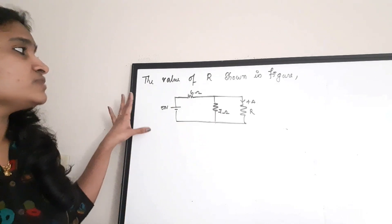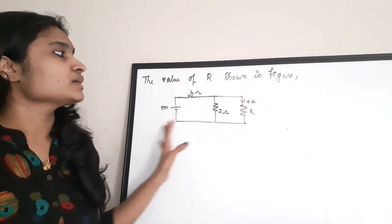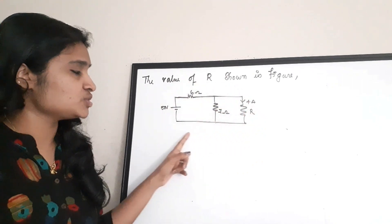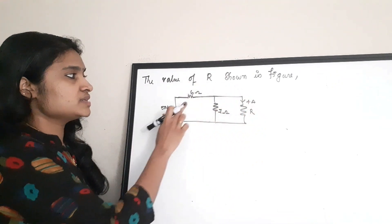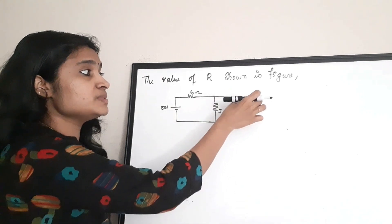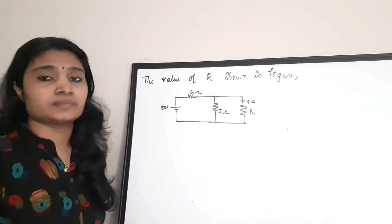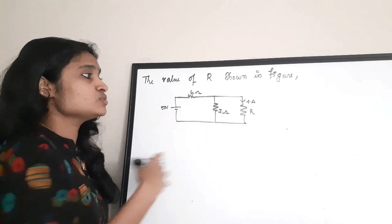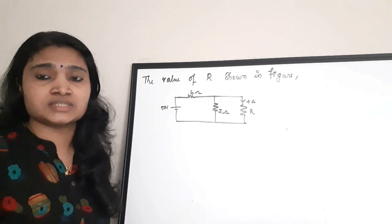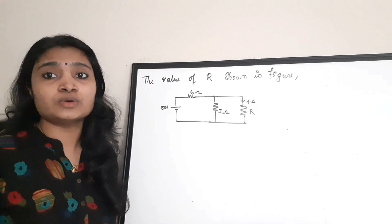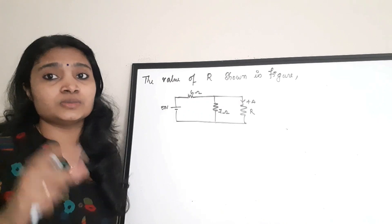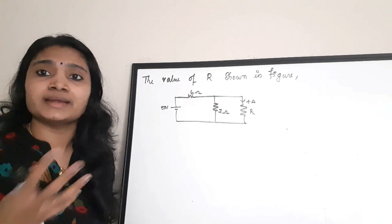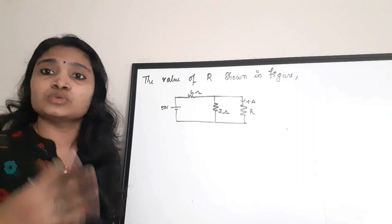The first question asks for the value of resistor R shown in the figure. In the given circuit, there is a voltage source, a 6 ohm and 7 ohm resistor, and a 4 ampere current marked as flowing through resistor R. This is a simple question if you know nodal analysis. I've done a separate video on nodal analysis and there is a separate playlist for network analysis with many practice problems — please refer to that playlist.